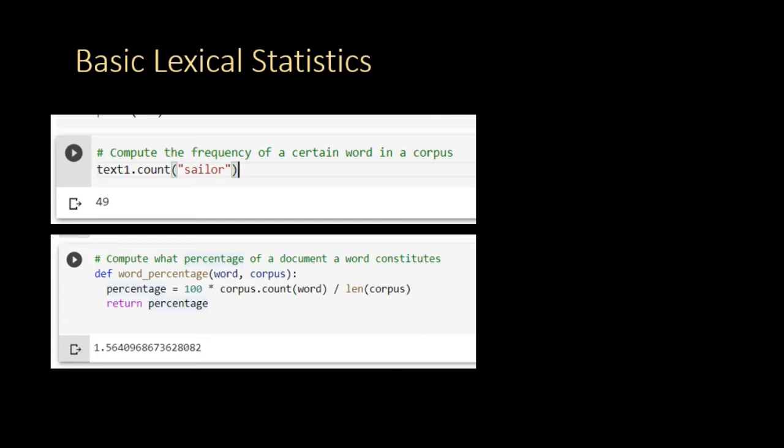Basic lexical statistics can come in really handy, particularly most of the algorithms, especially in the statistical natural language processing category, heavily rely on frequency and counting and basic statistics. If you want to count a number of times a word has occurred in a text, you can use the count method within the text object. And you can use the following method if you want to actually see what percentage of a document belongs to a certain word.